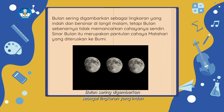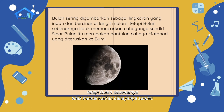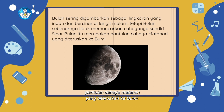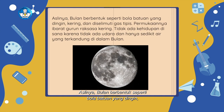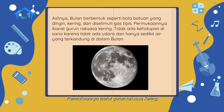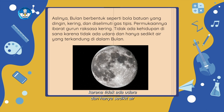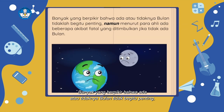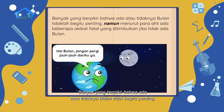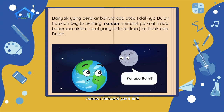'Bulan sering digambarkan sebagai lingkaran yang indah dan bersinar di langit malam. Tetapi bulan sebenarnya tidak memancarkan cahayanya sendiri. Sinar bulan itu merupakan pantulan cahaya matahari yang diteruskan ke bumi. Aslinya bulan berbentuk seperti bola batuan yang dingin, kering, dan diselimuti gas tipis. Permukaannya ibarat gurun raksasa kering, tidak ada kehidupan di sana karena tidak ada udara dan hanya sedikit air yang terkandung di dalam bulan. Banyak yang berpikir bahwa ada atau tidaknya bulan tidak begitu penting, namun menurut para ahli ada beberapa akibat fatal yang ditimbulkan jika tidak ada bulan.'